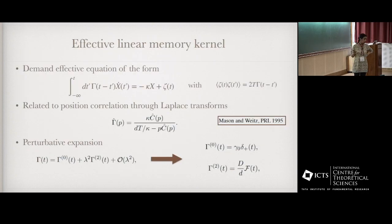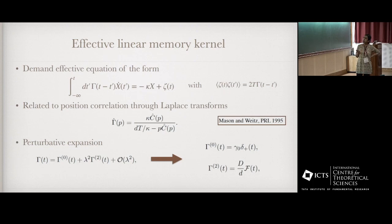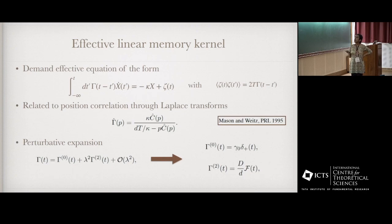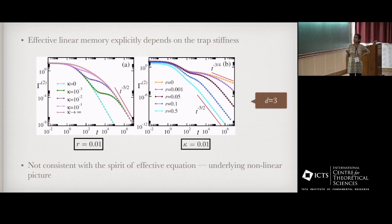Here we have plotted the numerically evaluated correction to the two-point correlation for different dimensions with a specific interaction potential. For example, at d=3 at criticality we have a t^{−3/4} decay which crosses over to t^{−5/2} as we go away from criticality. There are clear signatures of the underlying phase transition in the probe motion. Now, coming back to the other question: if we try to extract the effective linear memory kernel by demanding an overdamped equation of a specific form, this memory kernel is related to the Laplace transform of the two-point correlation we calculated.